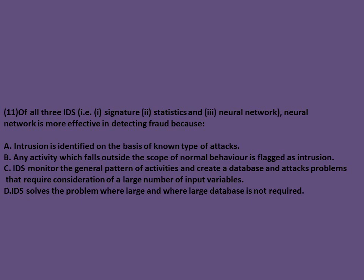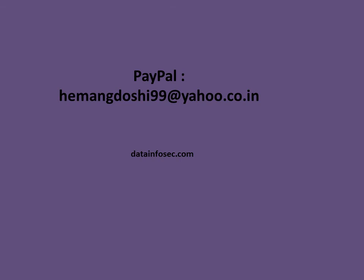Out of the three IDS types, neural network is more effective in detecting fraud because neural networks are capable of capturing relationships and patterns often missed by other statistical methods. General patterns of activities are monitored and a database is created. Option A is for signature-based IDS and option B is for statistical-based IDS.